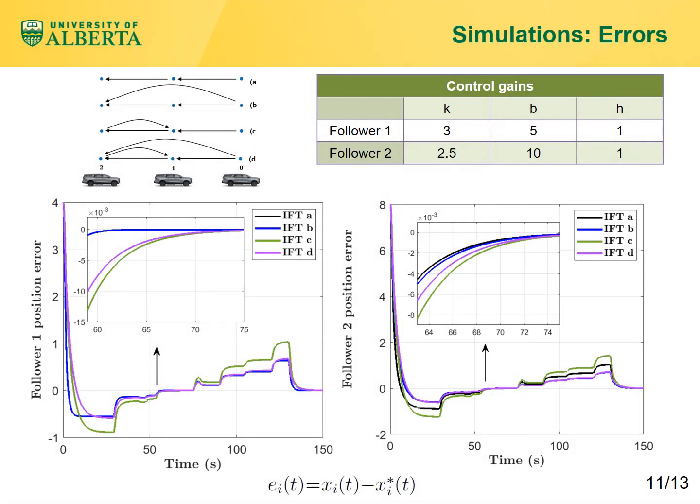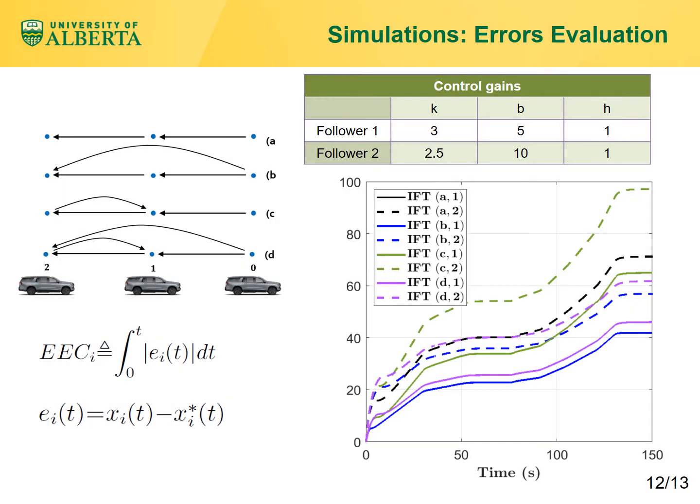Now we set k=2.5, b=10, and h=1 for follower 2. The error signals for followers 1 and 2 across the four IFTs are depicted here.